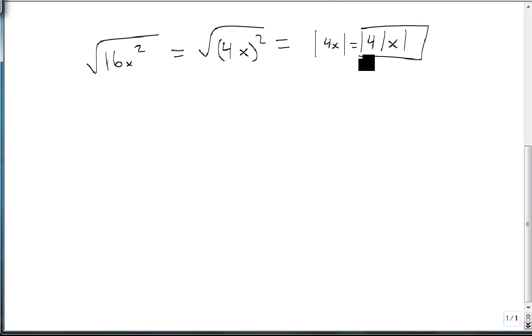So we can only pull numbers out of an absolute value if they are being multiplied. If that was 4 plus x, or x plus 4, we'd have to leave it inside because it's connected by a plus sign. Only factors come out.